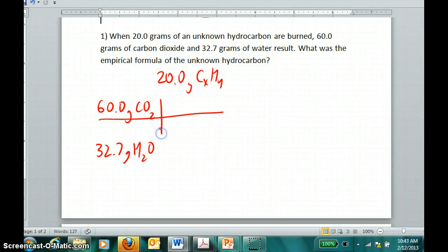Quick calculation: because 12 grams are carbon out of every 44 grams of CO2, we get as a mass 16.4 grams of carbon, which had to come from this 20 grams here.